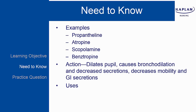Anticholinergics have a variety of indications and uses. Examples include ophthalmic exams, because they can create mydriasis or pupil dilation, so atropine or scopolamine could be used. As they can address nausea and vomiting, scopolamine is often used to address motion sickness.